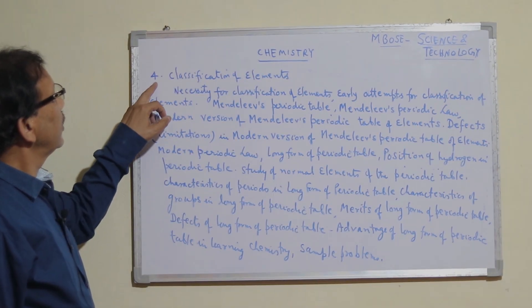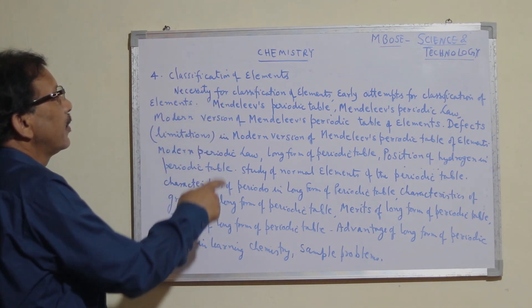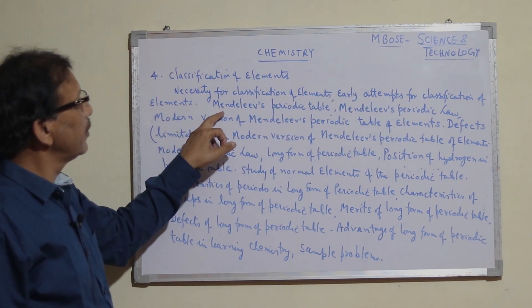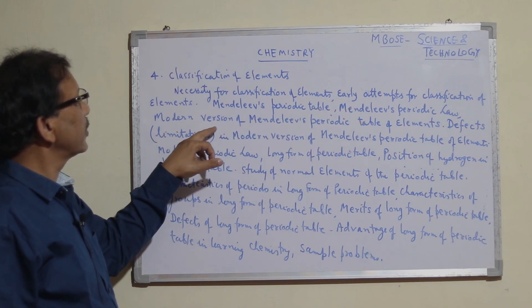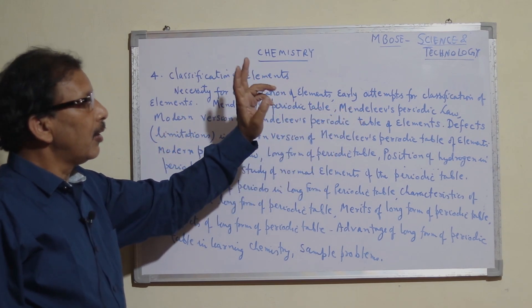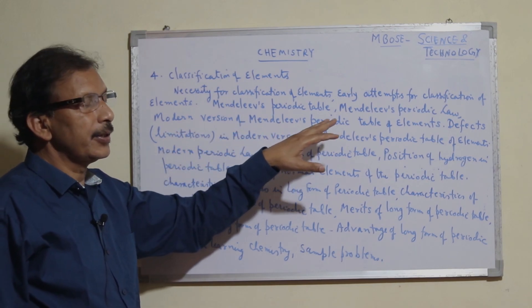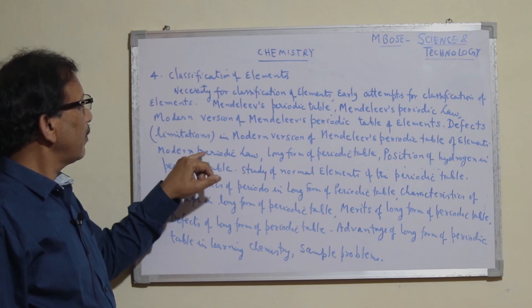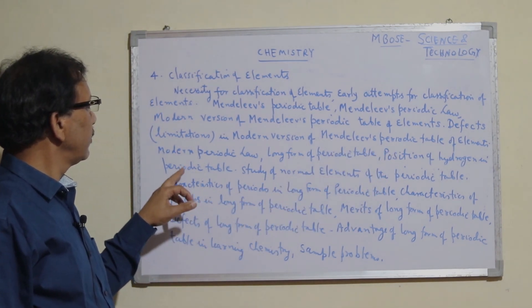Chapter 4 is classification of elements in chemistry. We study necessity for classification of elements, earlier attempts for classification, Mendeleev's periodic table, Mendeleev's periodic law, modern version of Mendeleev's periodic table, and defects or limitations in the modern version.